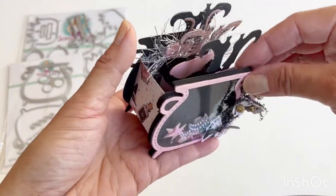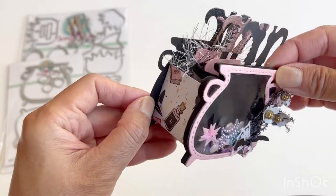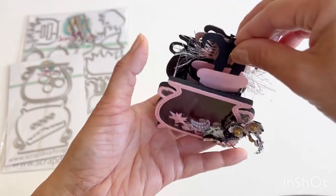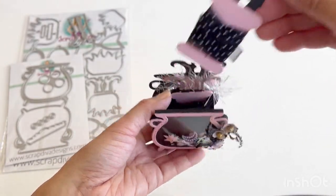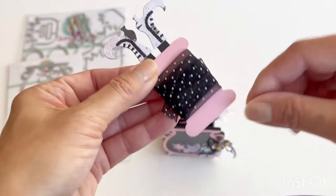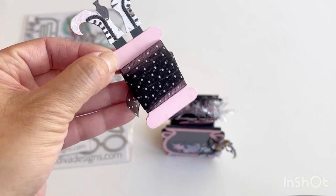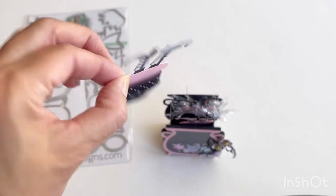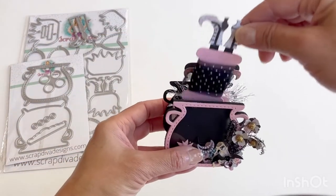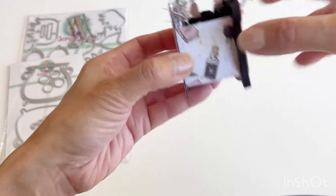I would recommend using 110 pound cardstock if you're going to be making this project because it makes it much sturdier. Same with the witch boot bobbins, I recommend using 110 pound cardstock to make the bobbin or floss holder part of this project. This is a nice way to gift trim to your pen pals.